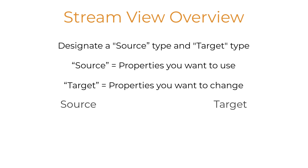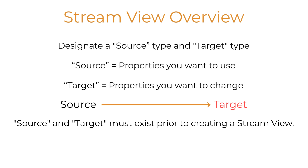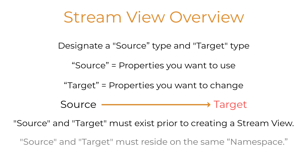The StreamView creation process allows you to map properties from the source or original type to selected properties in the target type. Please note, both the source type and target type must exist prior to creating the StreamView, and they must reside in the same namespace.